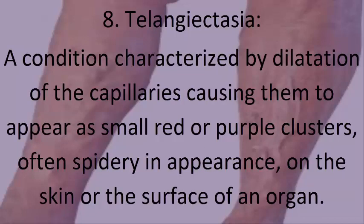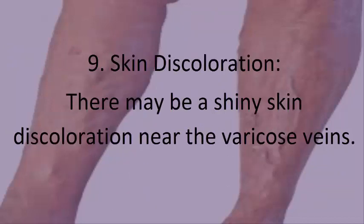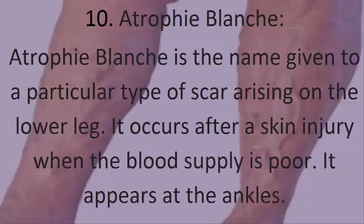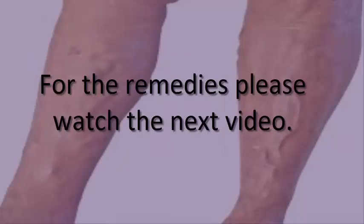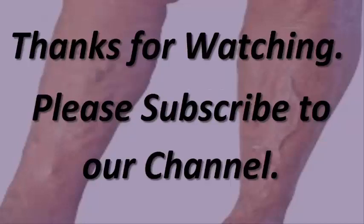8. Telangiectasia: a condition characterized by dilatation of the capillaries, causing them to appear as small red or purple clusters, often spidery in appearance, on the skin or the surface of an organ. 9. Skin discoloration: there may be a shiny skin discoloration near the varicose veins. 10. Atrophie blanche: a particular type of scar arising on the lower leg, occurring after a skin injury when the blood supply is poor, appearing at the ankles. Hopefully you now understand what varicose veins actually means. For remedies, please watch the next video. Thanks for watching.